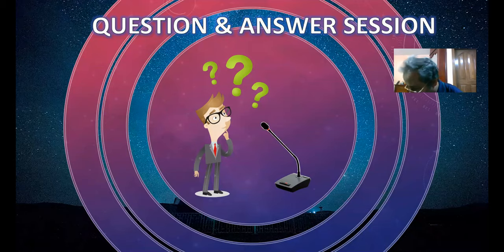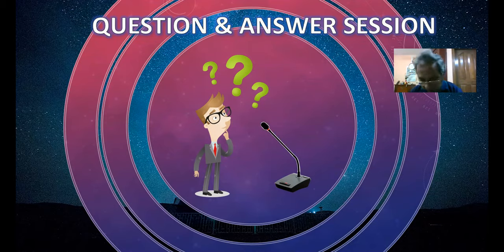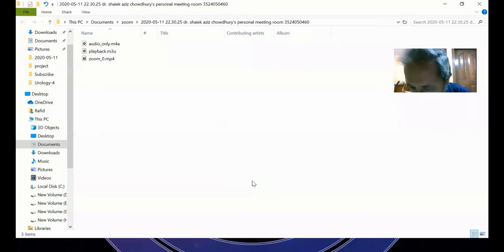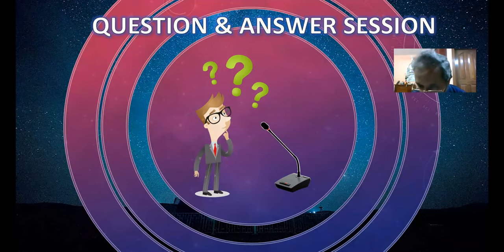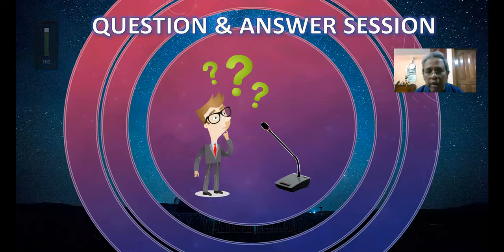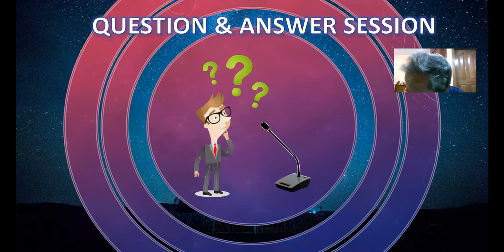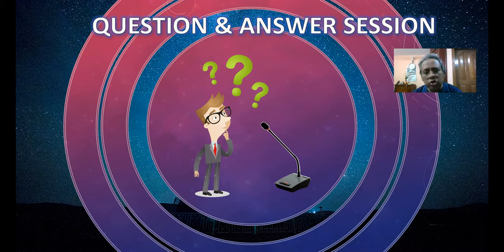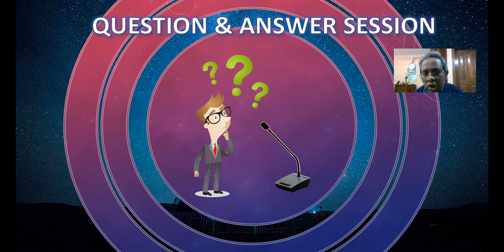A final question about ileal conduit: in ileal conduit, the two ureters are implanted into the ileal segment and urine drains through the stoma. In ureterosigmoidostomy, both ureters are implanted into the rectum or sigmoid colon, so urine and fecal matter both pass through the anus together.